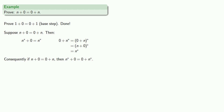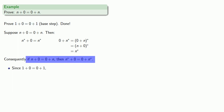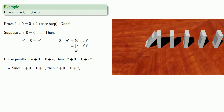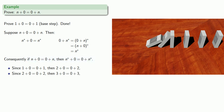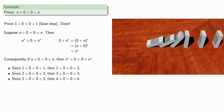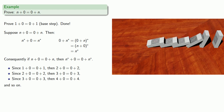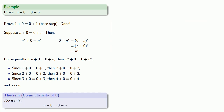Let's summarize. Since one plus zero equals zero plus one, we know the statement is true for the successor of one, so two plus zero equals zero plus two. And since that's true, it holds for the successor of two — three plus zero equals zero plus three. Since it's true for three, it's true for the successor of three, and so on. All of our dominoes fall over and we get the theorem: for any natural number n, n plus zero is equal to zero plus n.